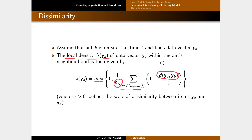Let's look at the extremes. If ya and all yb's in the patch are exactly the same vector, the dissimilarity is 0 for all of them. 0 divided by any constant is still 0, so 1 minus 0 gives us 1. Summing 25 ones and dividing by 25 gives us 1. So a density of 1 means maximum possible density — every site contains exactly the same vector.